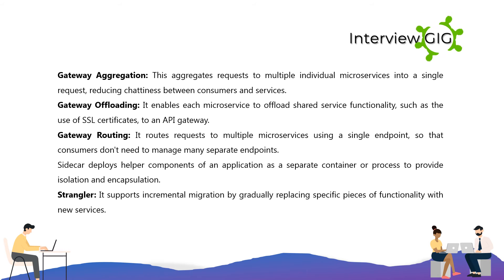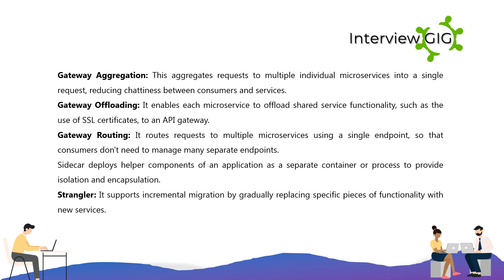Gateway Routing — routes requests to multiple microservices using a single endpoint, so that consumers don't need to manage many separate endpoints. Sidecar — deploys helper components of an application as a separate container or process to provide isolation and encapsulation. Strangler — supports incremental migration by gradually replacing specific pieces of functionality with new services.